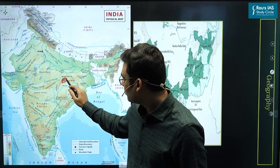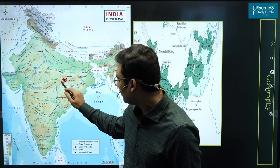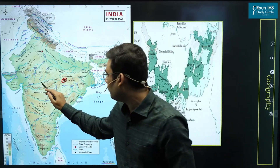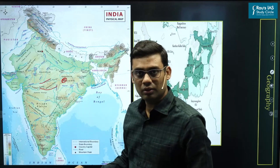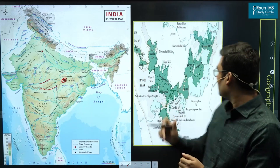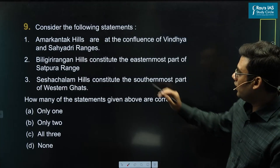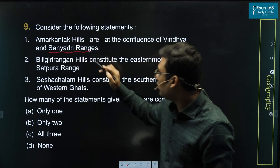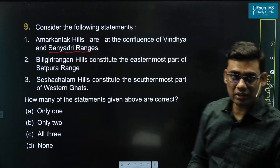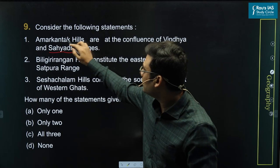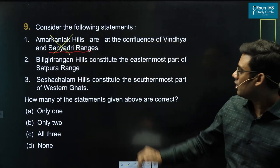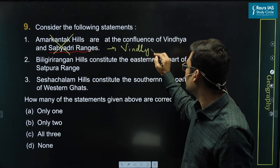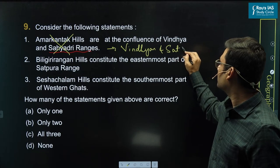Looking at the location of Amarkandak hills, we can see they are at the confluence of the Vindhyas and the Satpudas, not the Vindhyas and Sahyadri. Sahyadri refers to the Western Ghats, so this statement is incorrect — it should be Vindhyas and Satpuda.